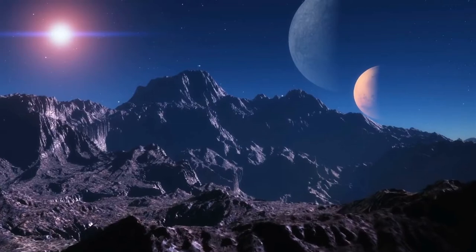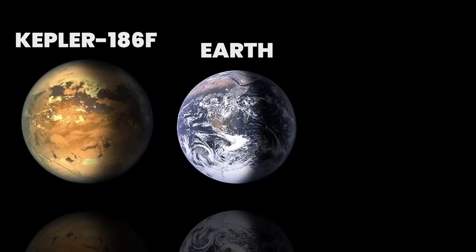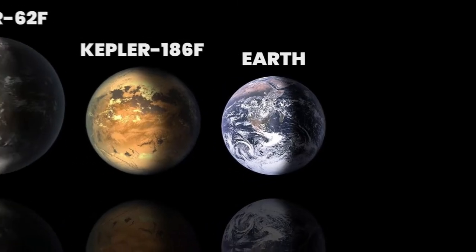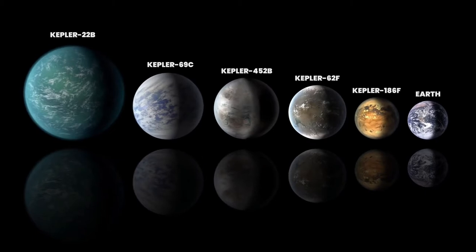These exoplanets are unlike anything we've ever seen in our solar system before. Most of them aren't significantly bigger than Earth and orbit so close to their stars that they complete one revolution every several days.